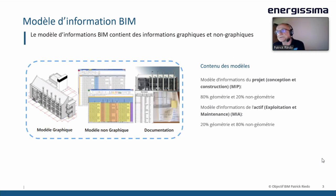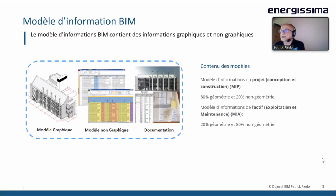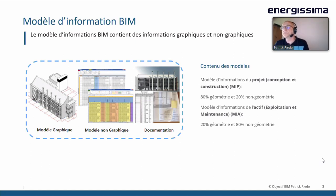La troisième partie de ce modèle d'information BIM, c'est la documentation. Ça peut être un manuel d'entretien, par exemple, qu'on irait également lier avec la géométrie ou avec une base de données. On va utiliser deux modèles d'informations : le premier, durant la conception et la construction, composé principalement de géométrie et de peu d'éléments non géométriques ; puis un modèle d'information de l'actif pour l'exploitation et la maintenance, où on va inverser les proportions avec beaucoup plus d'éléments non géométriques, beaucoup plus d'éléments textes plutôt que de la géométrie.